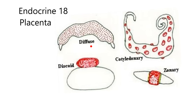First is diffuse attachment — every dot on this placenta attaches to a little area on the uterine wall. Horses and pigs have this type. Next is discoid — one large area attaches to the uterine wall with a thin membrane around it. Rodents and humans have this type. Isn't that interesting — rodents and humans share this classification!